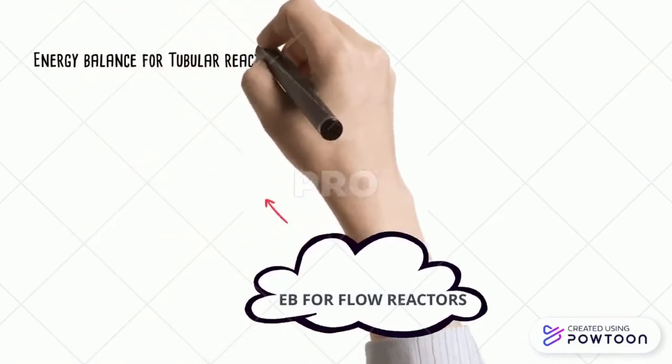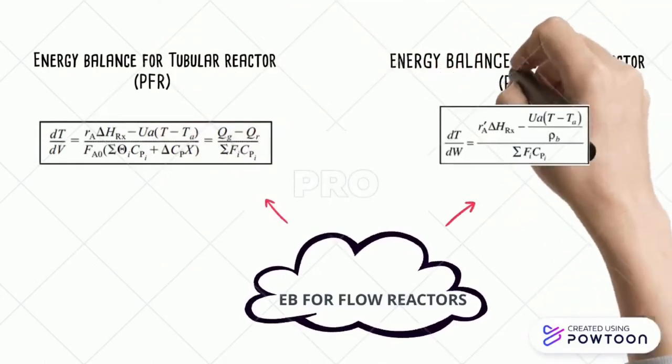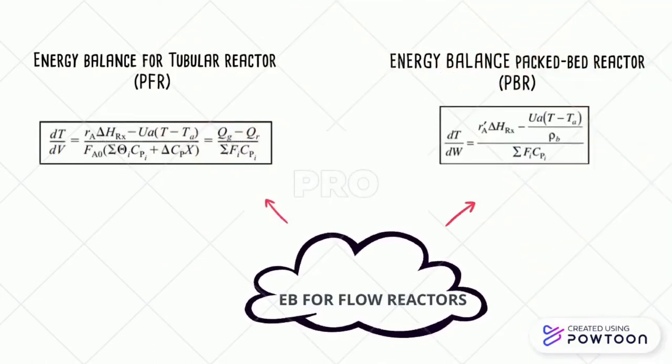Energy balance for the tubular reactor PFR can be written into the expression below, while for a packed-bed reactor, since dW equals bulk density times dV, the equation can be expressed as the one below instead.